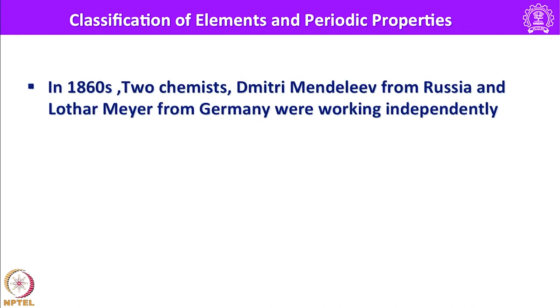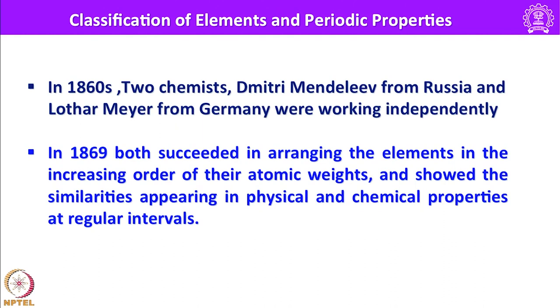In the 1860s, two chemists — Dmitri Mendeleev from Russia and Lothar Meyer from Germany — started working independently to come up with a different organized system. In 1869, both succeeded in arranging elements in the increasing order of their atomic weight and showed similarities appearing in physical and chemical properties at regular intervals. Lothar Meyer plotted physical properties such as atomic volume, melting point and boiling point against atomic weight and showed a periodically repeating pattern.